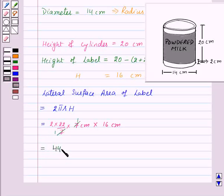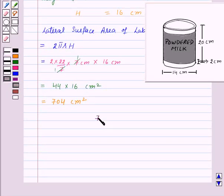44 into 16 centimeters square, that is 704 centimeters square. So the required area of the label is 704 centimeters square.